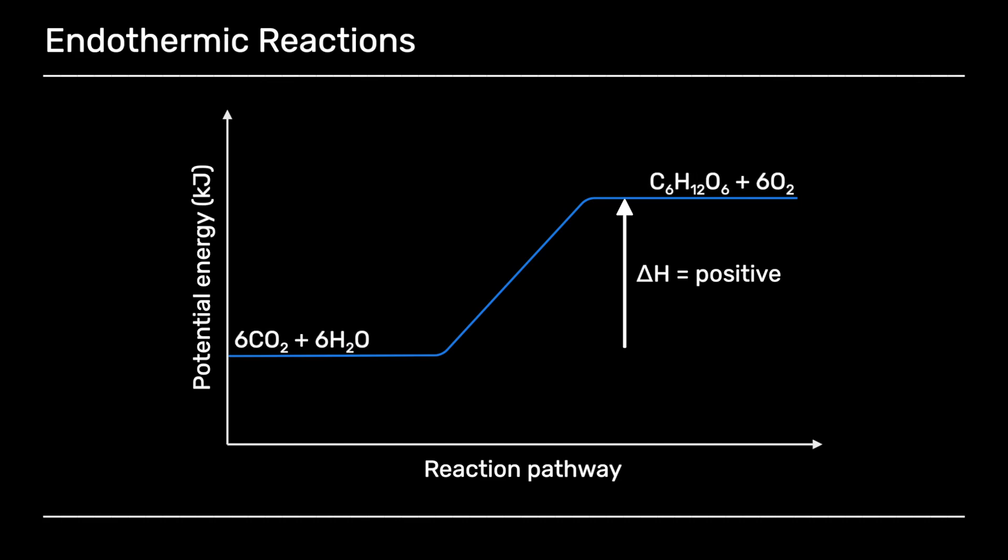And a good example of that is photosynthesis, as you may well know. This is where we use sunlight to turn CO2 and water into organic molecules, such as glucose. So that energy input is going into the chemicals, the system is gaining energy, the surroundings are losing energy, and delta H for that process will be positive.